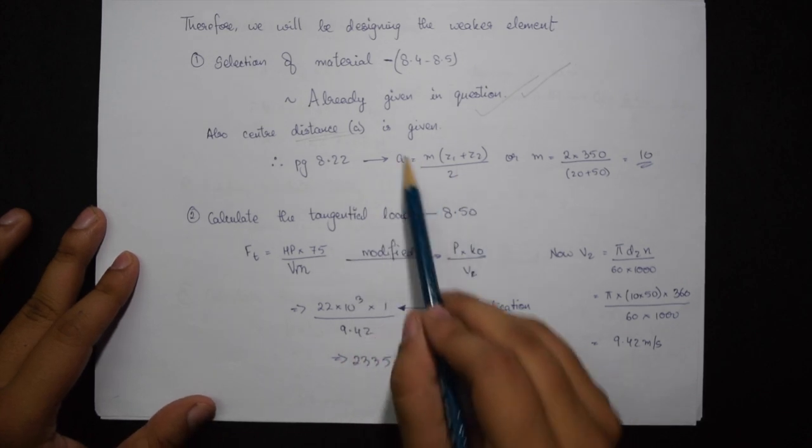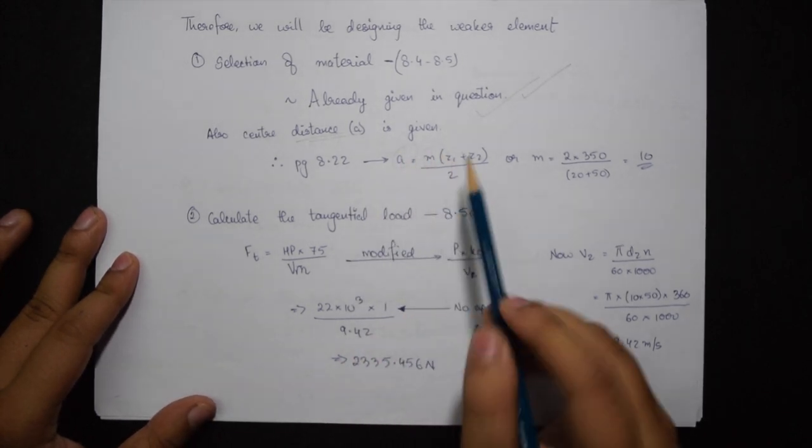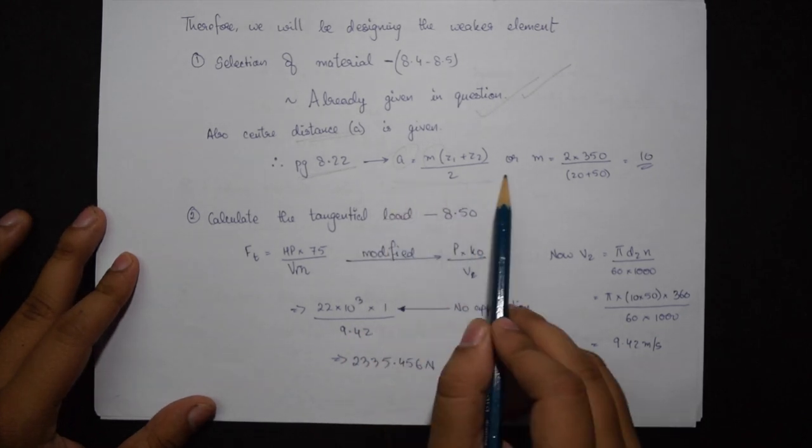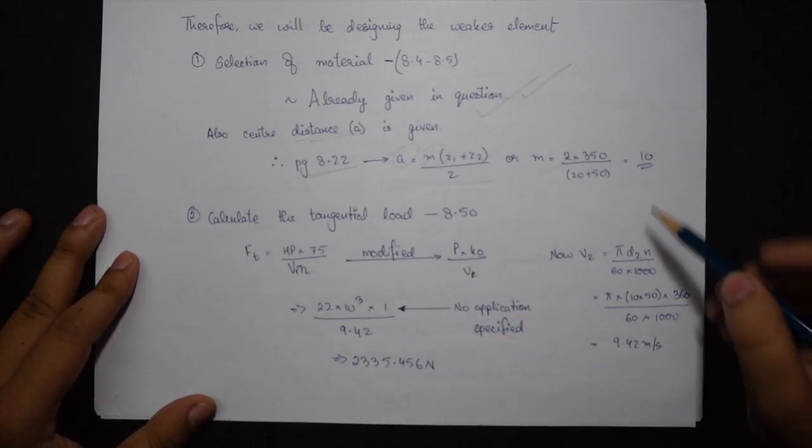So step number 4 is reduced. I will be directly calculating the module by using this formula given on page 8.22. I know the value of Z1, Z2 and A, so my module comes to be 10.